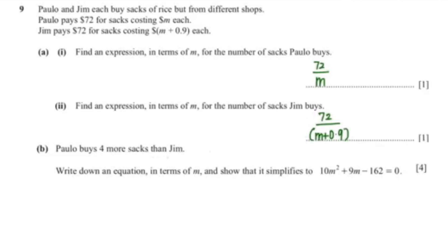This next question says that Paula buys 4 more sacks than Jim. So we know that Paula's expression is 72 over M. And Paula's expression is also 72 over M plus 0.9 plus 4. And we'll just equal those two.